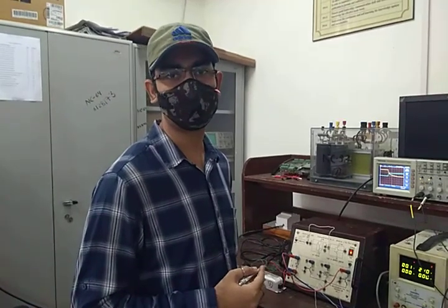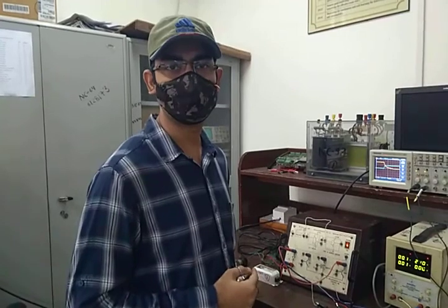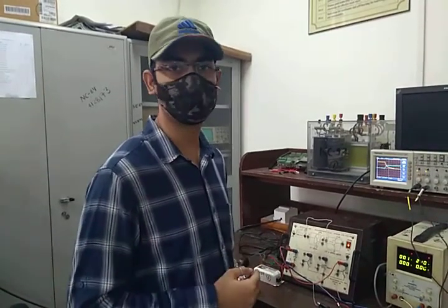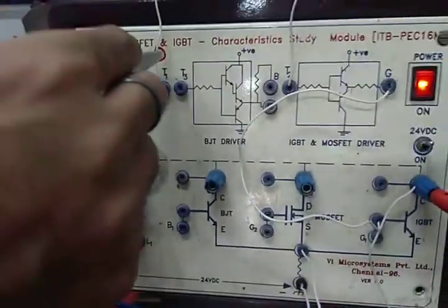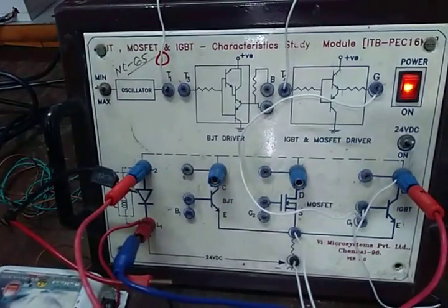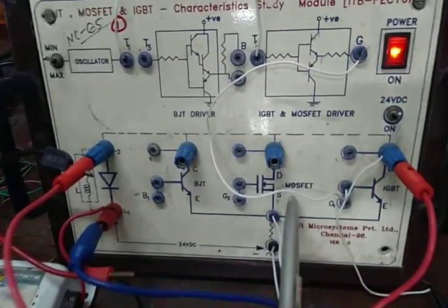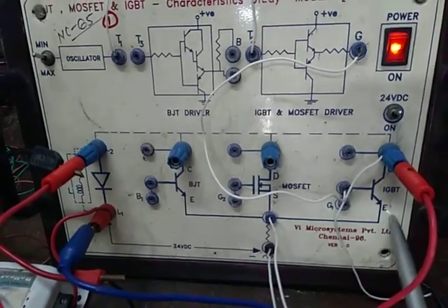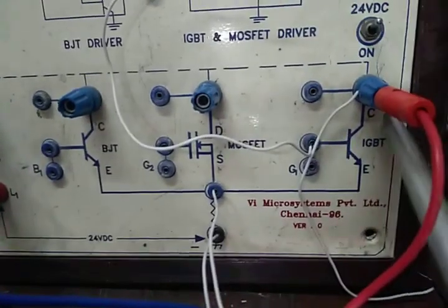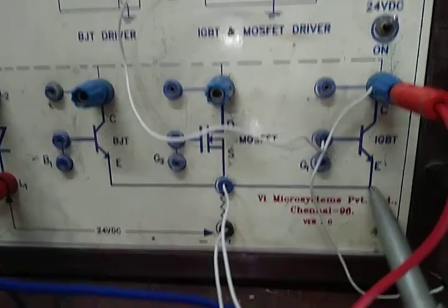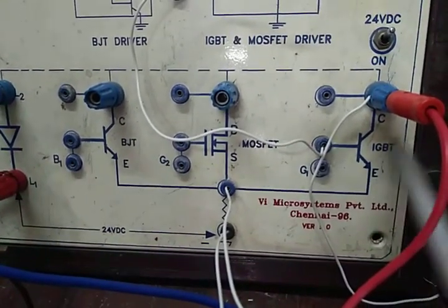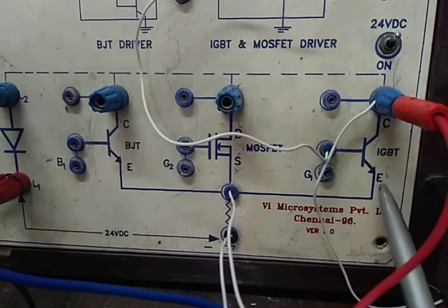So firstly we are going to perform this for the IGBT. For that we have a dedicated kit in which IGBT and MOSFET are fitted. This is our kit which is dedicated for the BJT, MOSFET, and IGBT characteristic study module. You can see that the MOSFET is already fitted over here, and here is our IGBT fitted internally. So we have to take the dynamic characteristics of this IGBT in this particular video.